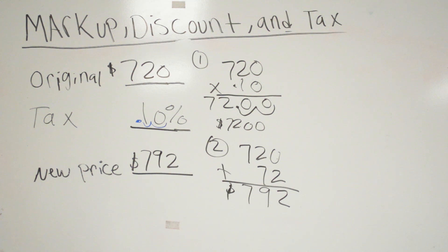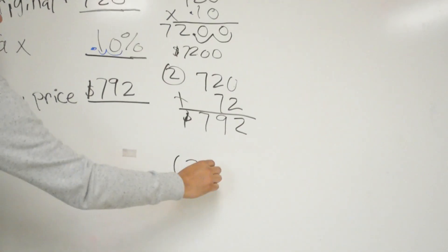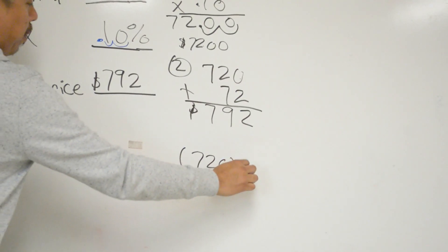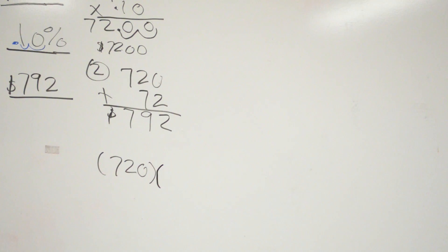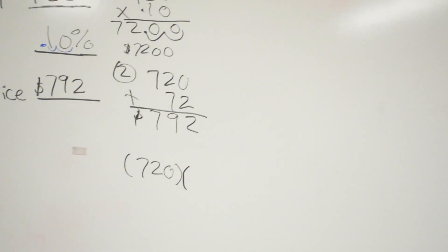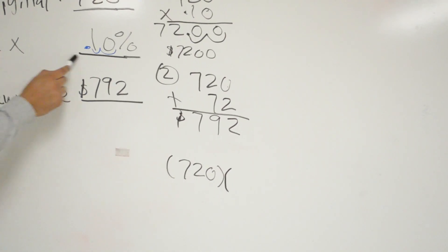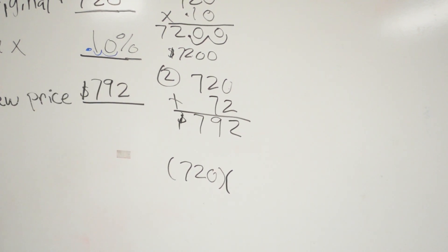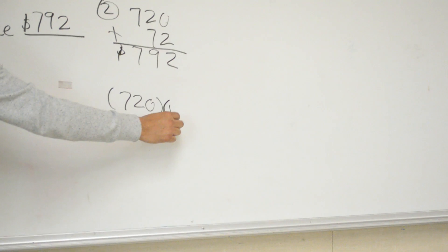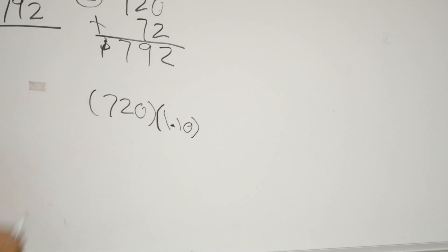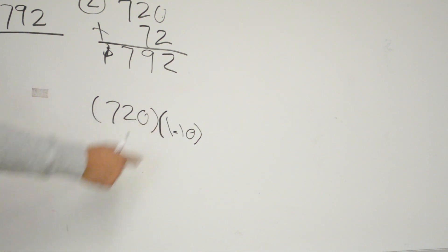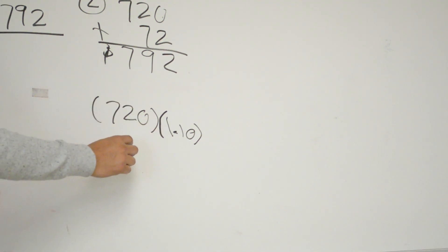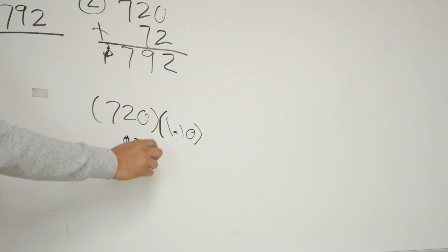The other way to solve it: start with the original price of $720 and focus on what we're going to pay. We're paying 100% plus 10% more, which is 110%, or 1.10. When we multiply 720 times 1.10, we get the same answer of $792.